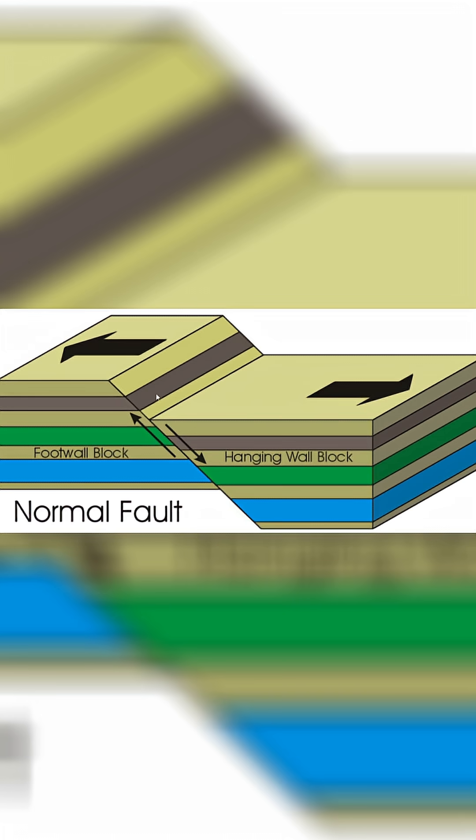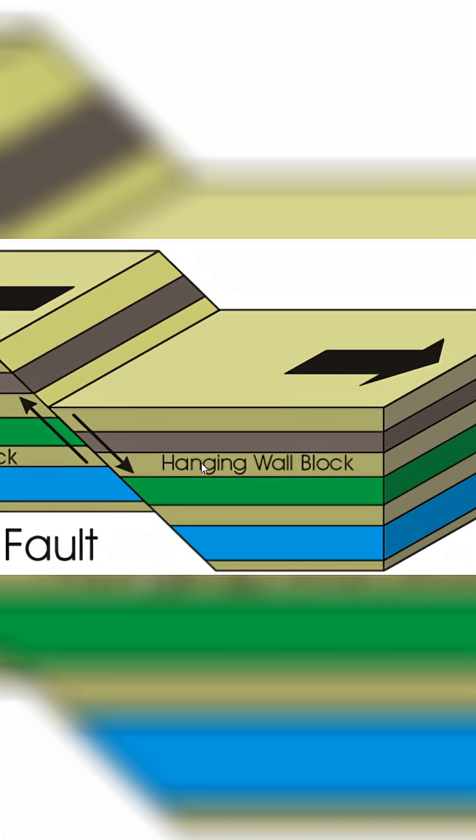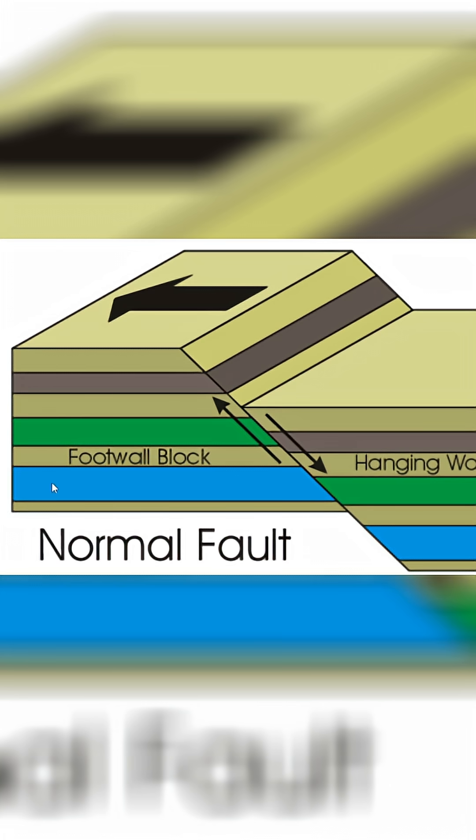And once this fault is created, one section of the crust, known as a hanging wall, will be slid down, and the other section of crust, known as a foot wall, will usually remain the same.